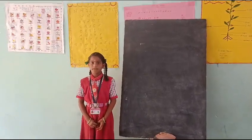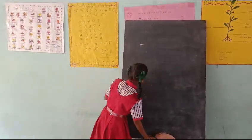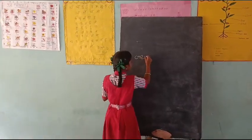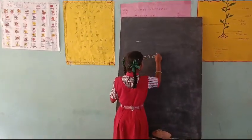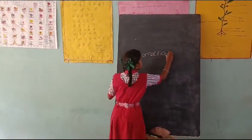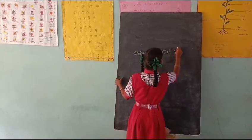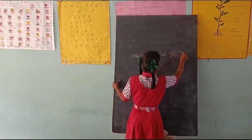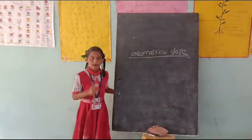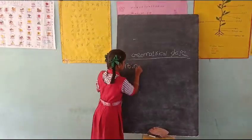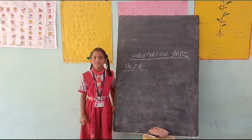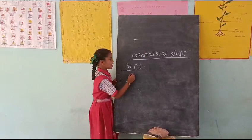Today we are going to discuss about geometrical shapes. First one is Point. A point has invisible dots, it is called Point like this.